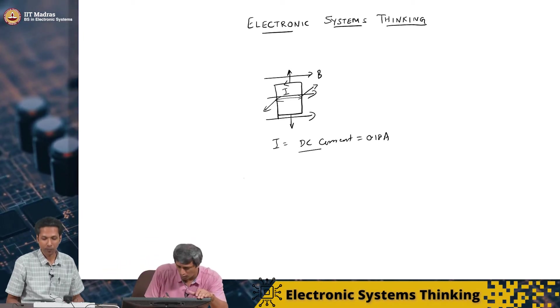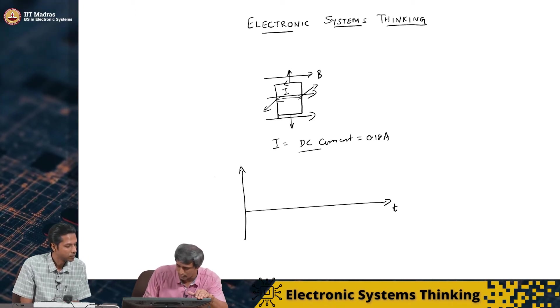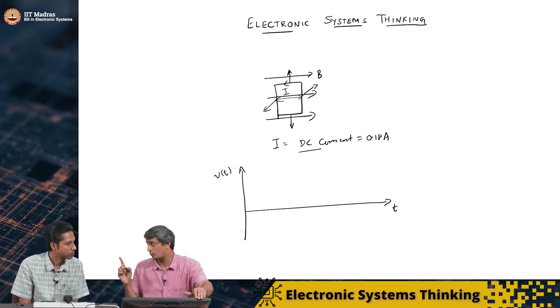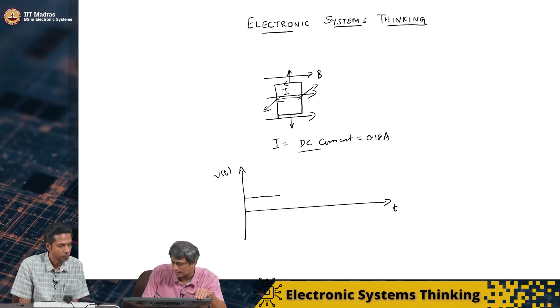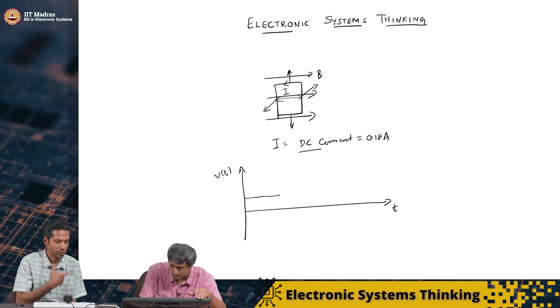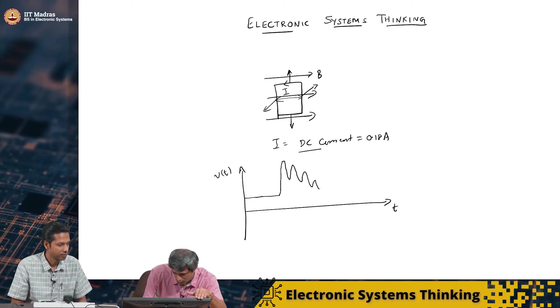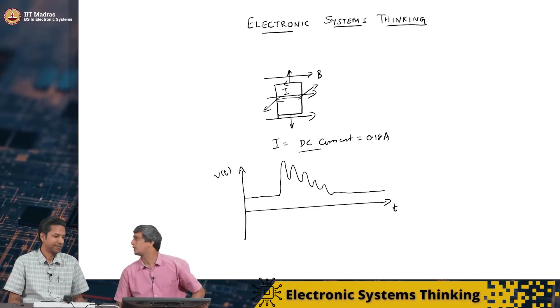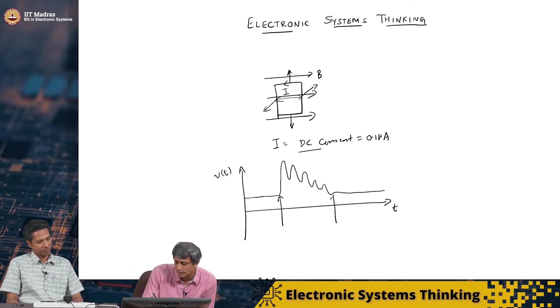So, what we did was, we just took the fan, we connected nothing to it. There was no power supply connected to it. We just connected the output of those two terminals through which we fed the DC current to the oscilloscope. We rotated it and saw what happened. Right. So, what we got in that process was the following.